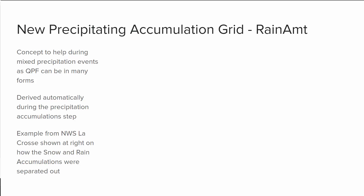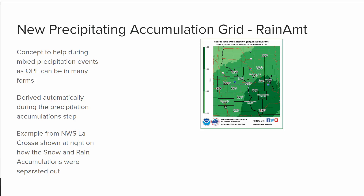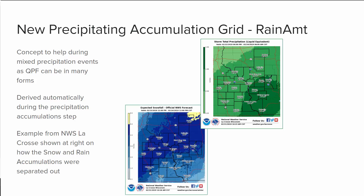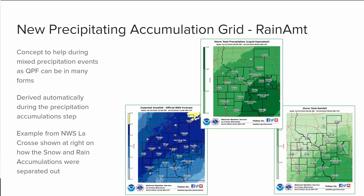Another new item in Forecast Builder is a precipitating accumulation grid called rain amount. The concept is to help during mixed precipitation events, as QPF can take many forms. This grid will be derived automatically during the precipitation accumulation step with no effort required — it will just be created. An example from La Crosse shows a storm total QPF grid over a couple of days. There is an expected snowfall, but not all of that QPF goes into snow — some goes to rain. The rain amount grid displays as a storm total rainfall, allowing you to see the separation between snowfall and rainfall, which can help in hydrology to determine how much liquid precipitation could go into rivers.